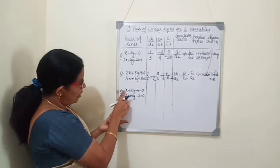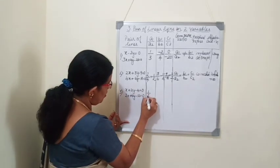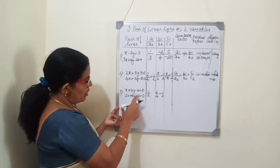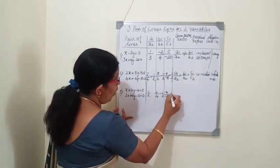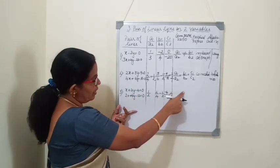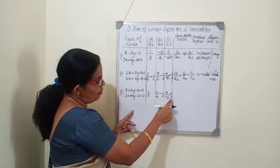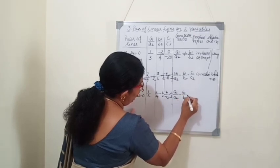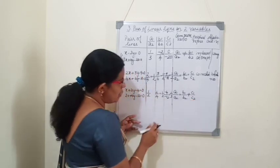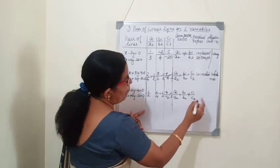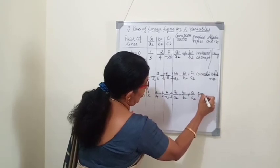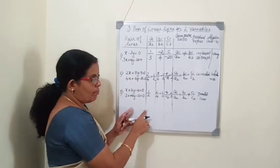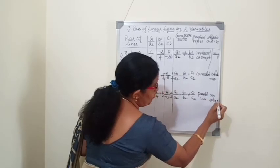In the third example, a1 by a2 is 1 by 2, b1 by b2 is 2 by 4 which is also 1 by 2, but c1 by c2 is minus 4 by minus 12, which is 1 by 3. So a1 by a2 equals b1 by b2 but not equal to c1 by c2. In this case the graph will show parallel lines — we get two parallel lines and there will be no solution.